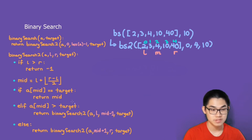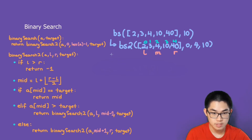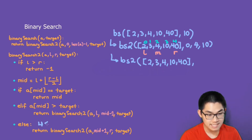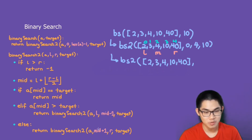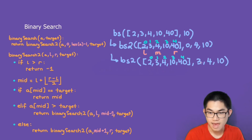We have three case scenarios. Array at mid is number 4. Is 4 equal to the target 10? No. Is 4 larger than 10? No. So we call binary search 2 recursively. Because 4 is less than 10, we take L and move it to the right of mid - that's what we're doing here. L gets moved to mid plus 1, so L becomes 3. R stays the same as 4, and the target stays 10. L is at index 3 and R is at index 4.